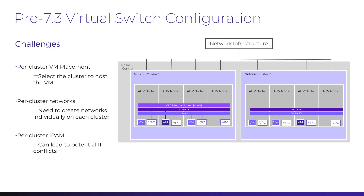Before we get into this new feature, let's review our virtual switch capabilities for AHV up to this point. Prior to this release, distributed virtual switches were only supported on PRISM Element clusters. This meant that even if two clusters share their uplinks in the same Layer 2 broadcast network, users had to configure and manage the virtual switches individually on both clusters, even when they were connected to the same PRISM Central.